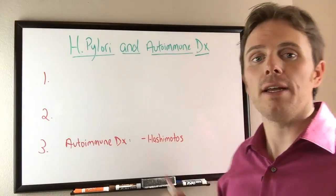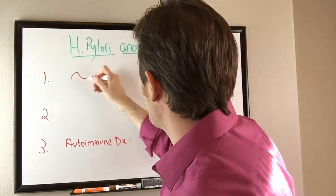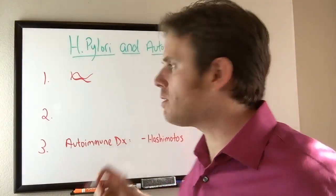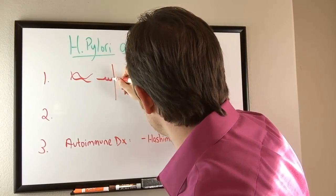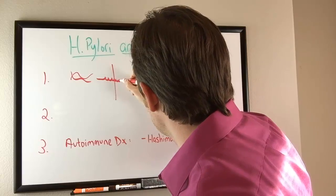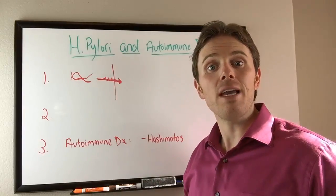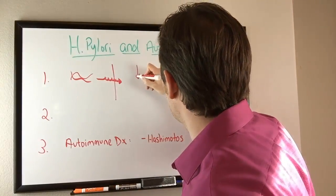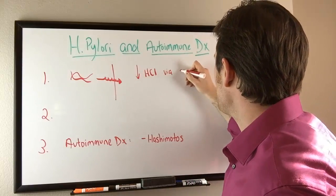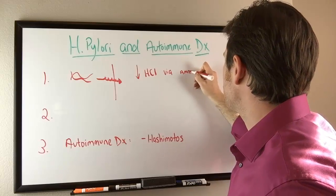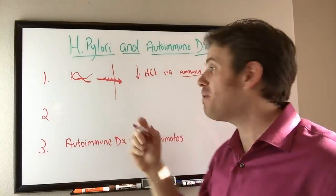Now H. pylori is a bacteria, it's a gram-negative bacteria and it's shaped in a helical fashion and what it's known to do is, if here's the intestinal wall, it's actually able to burrow its way into the intestinal wall like a corkscrew. It creates gastric inflammation but it also decreases HCL. It decreases HCL via ammonia production, so ammonia is actually very pH basic, it's got about a pH of 11.